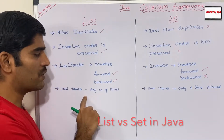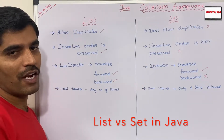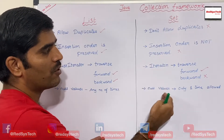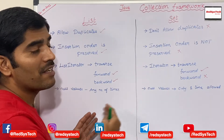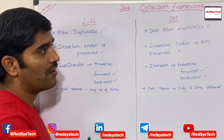Regarding null values, in a List you can insert any number of null values. But in case of Set, you can have only one null value. These are the main differences between List and Set in Java.